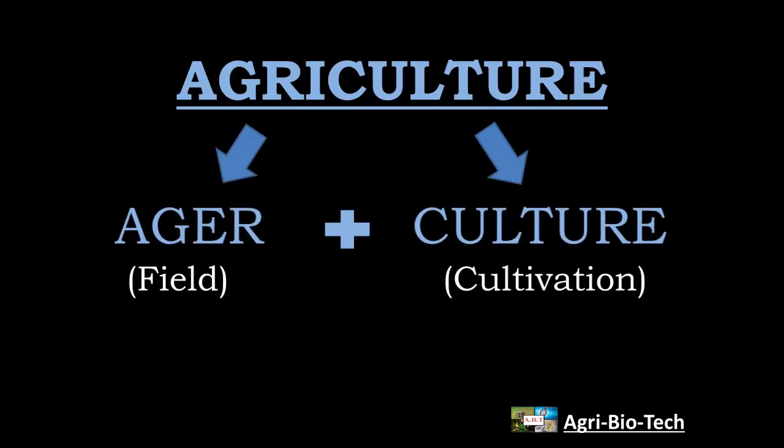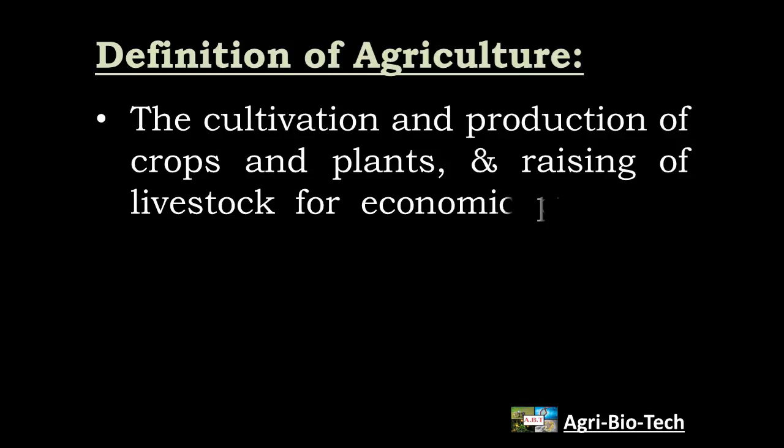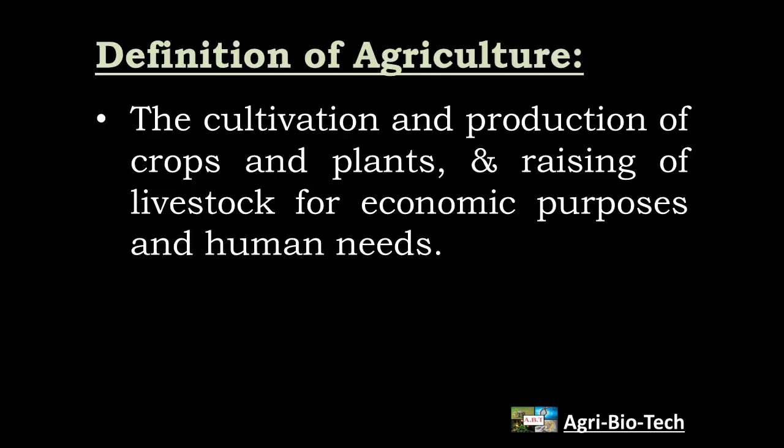So let's see what is agriculture. The term agriculture is derived from two Latin words agar and cultura. Agar or agri means soil or land or field, and cultura means cultivation. So agriculture means the cultivation of the soil. But is agriculture only confined in soil cultivation? No, it includes crop production, livestock farming, fisheries, forestry, etc. So agriculture is defined as the cultivation and production of plants and raising of livestock for economic purposes and human needs.